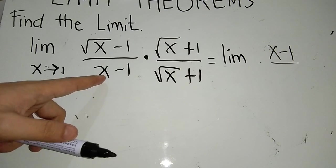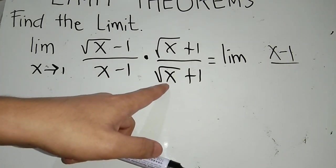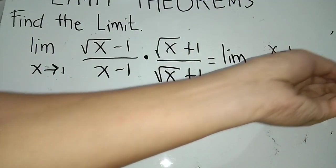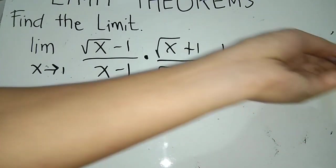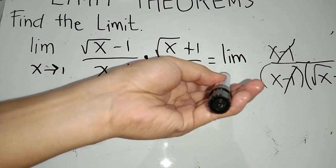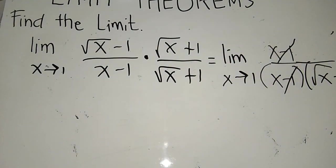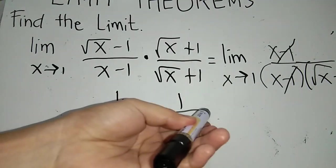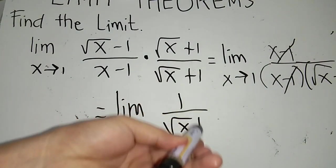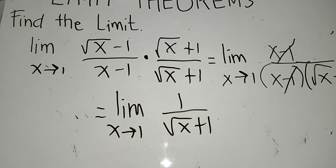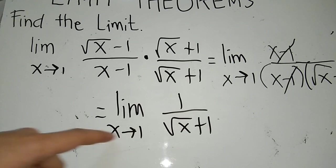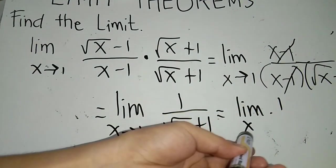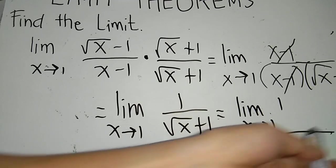In the denominator we have x minus 1 times square root of x plus 1 — just copy this without simplifying yet, because we need to cancel the x minus 1. After cancellation, what remains in the numerator is 1, giving us 1 over square root of x plus 1 as x approaches 1. We can now give the limit to the numerator and give the limit to the denominator separately.